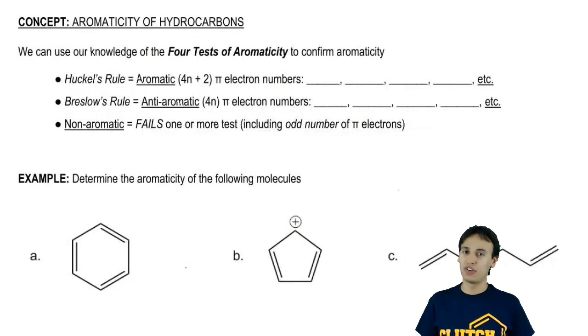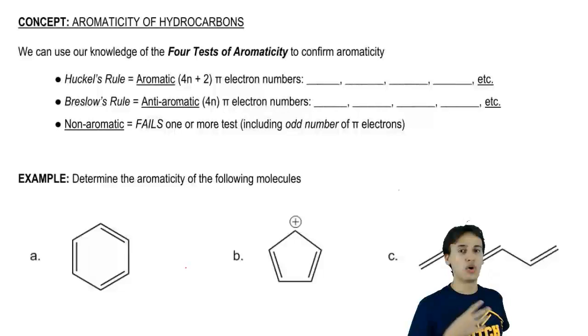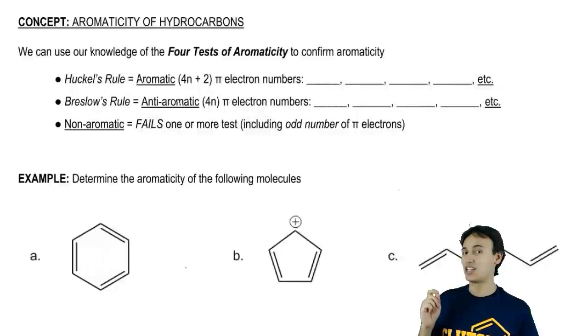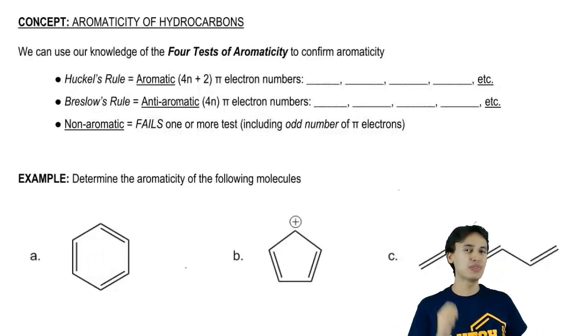Remember what those four tests of aromaticity were. We had the whole has to be a ring thing, cyclic. We had fully conjugated. We had that it has to be planar. But remember there was that last rule that was a little confusing: the 4n plus 2 pi electrons Huckel's rule.